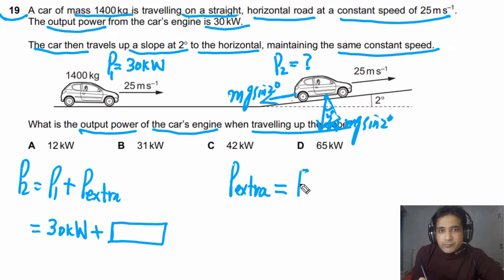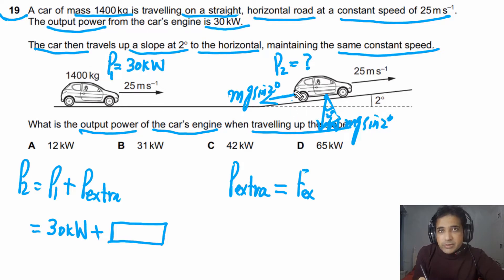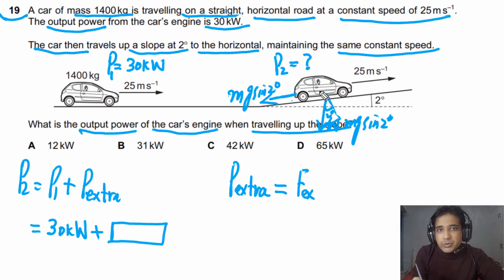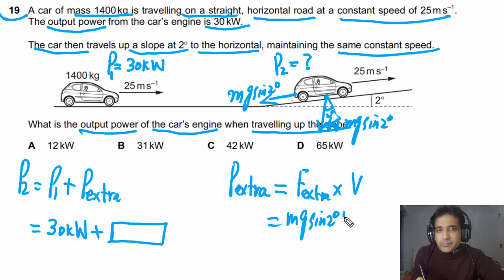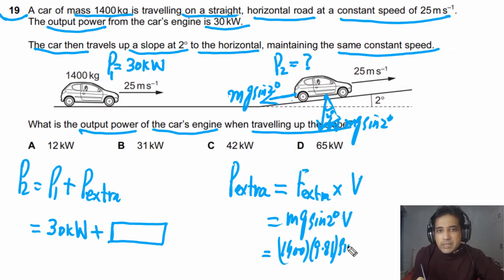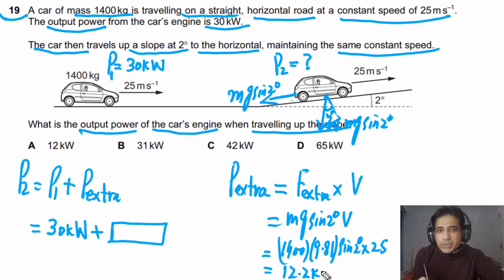On the horizontal road only air resistance acts, but going up the slope there is also the component of weight acting down the slope. So P extra equals mg sine two degrees times v. Substituting values: m = 1400, g = 9.81, sine of two degrees, times speed 25 m/s. Calculating this gives 12.2 kilowatts — the extra power required up the slope.